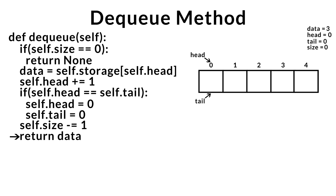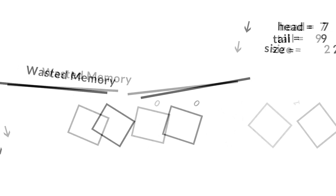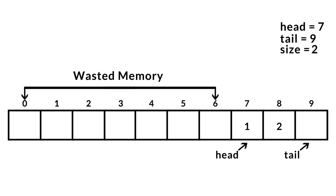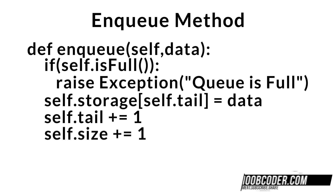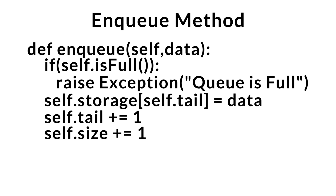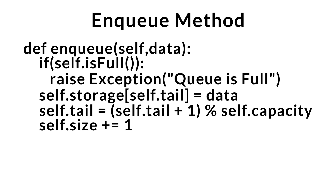Now let's talk about the downfall of implementing a queue like this. As our queue gets bigger, we could potentially be wasting more and more space. To combat this, we can implement a special kind of queue called a circular queue. The only difference between a circular queue and a regular queue is how we calculate our head and tail indices when we NQ or DQ. In our old NQ method, we simply incremented the tail index by one. In the circular queue's NQ method, we calculate the next tail index as (tail + 1) modulus capacity, which gives us the next position to insert at.